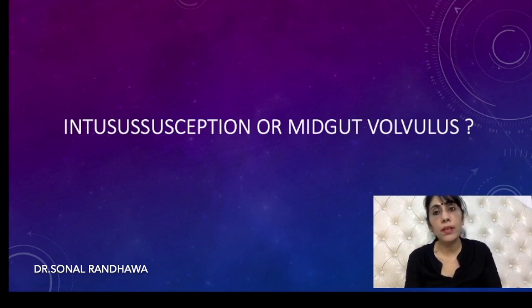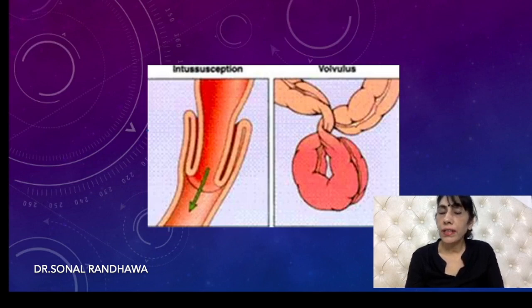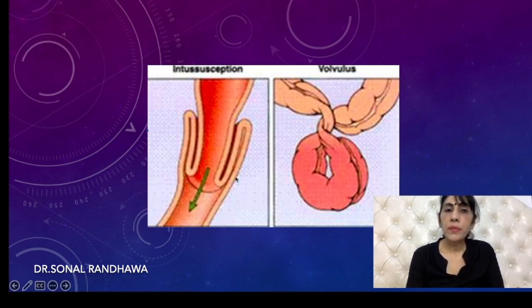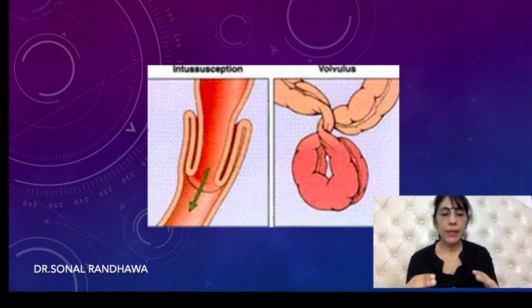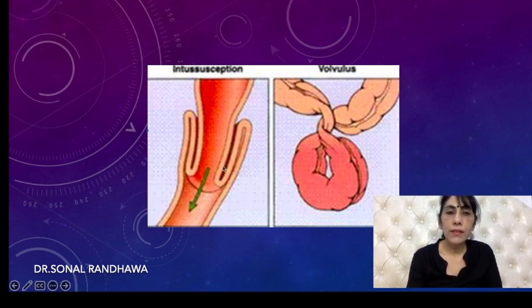Let's look at these two pictures to explain intussusception and volvulus briefly. Intussusception means one portion of the intestine goes into the other — like a bigger pipe going into a smaller pipe, or it folds on itself into the lumen, forming folds. Between these layers, mesentery and vessels are also pushed in, leading to edema and vessel entrapment.